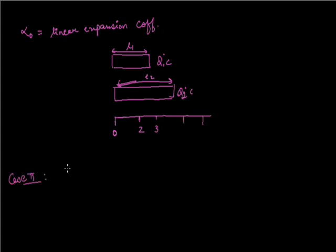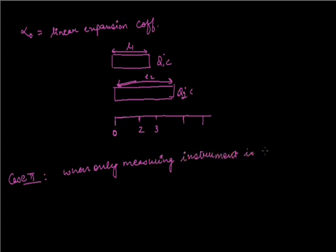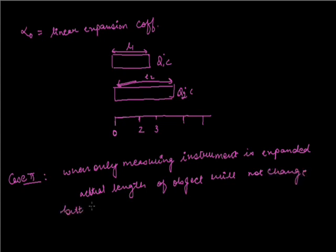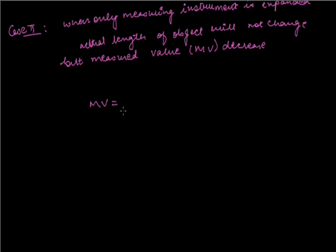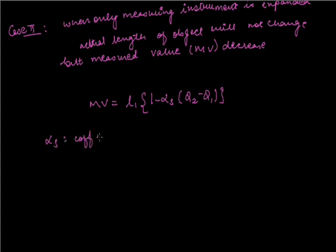Case two: when only the measuring instrument is expanded. The actual length of the object will not change, but the measured value decreases. The measured value equals L1 divided by (1 plus alpha_s times (theta 2 minus theta 1)), where alpha_s is the coefficient of linear expansion of the measuring instrument.